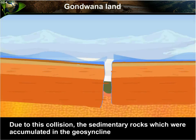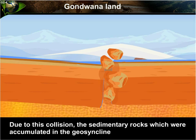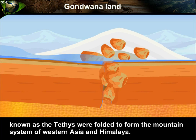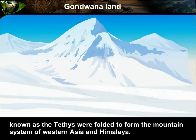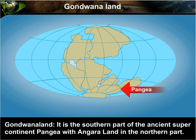Due to this collision, the sedimentary rocks which were accumulated in the geosyncline known as the Tethys were folded to form the mountain system of Western Asia and the Himalayas. Gondwana land is the southern part of the ancient supercontinent Pangea, with Angara land in the northern part.